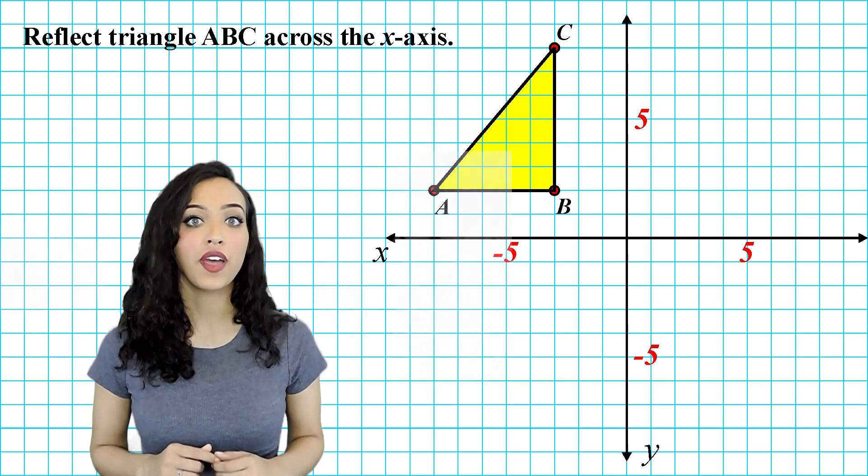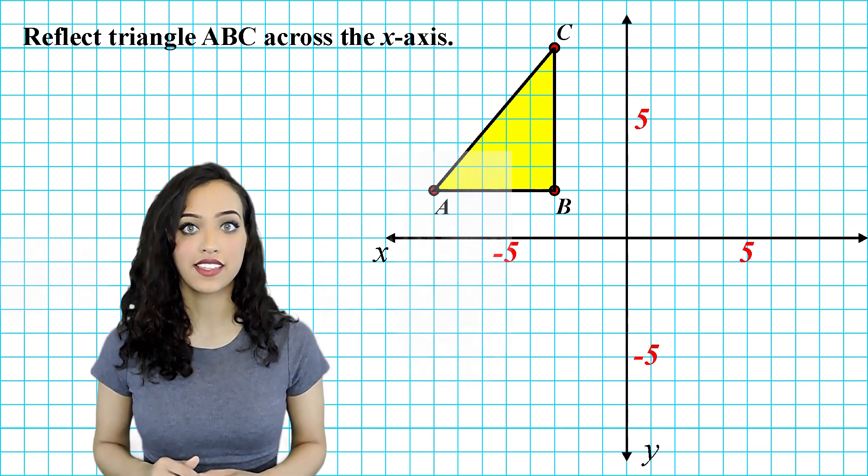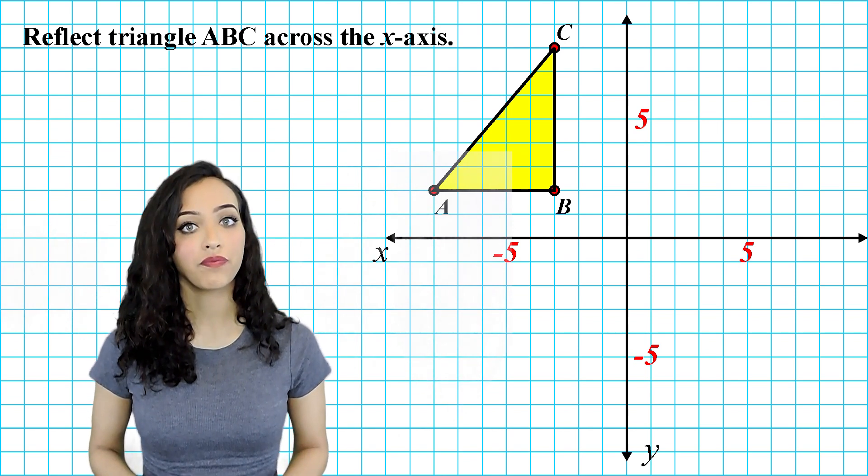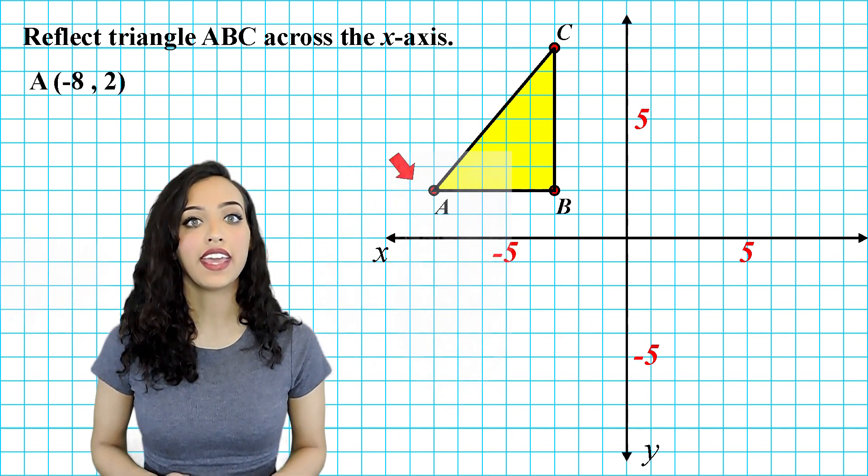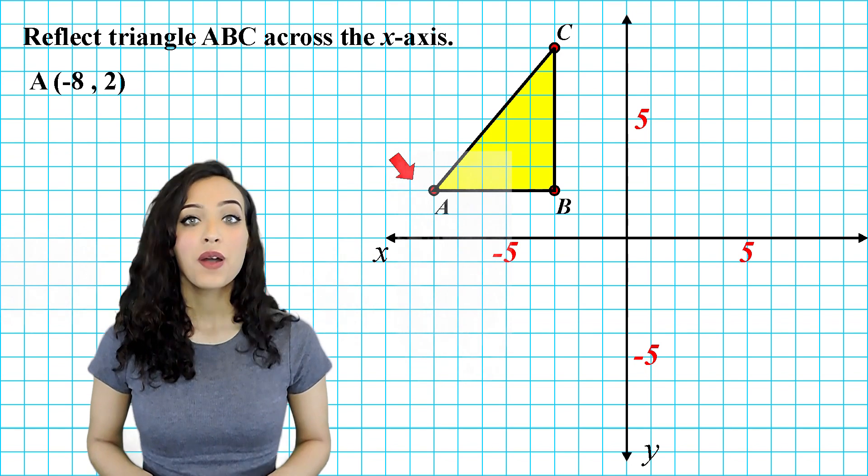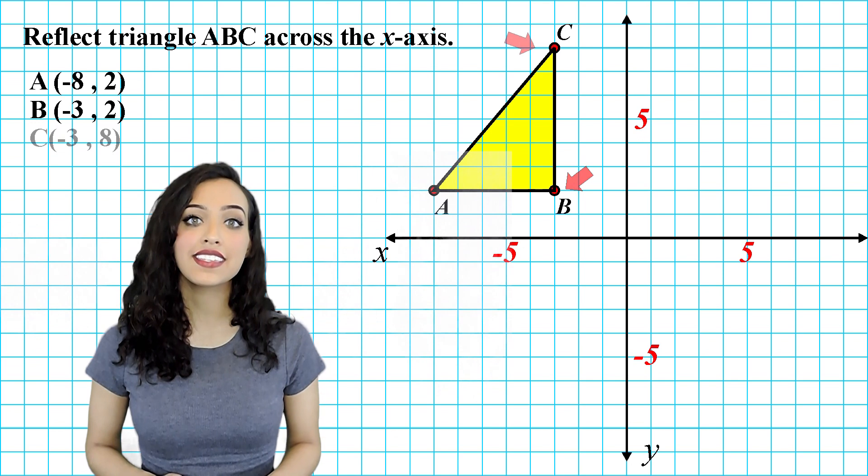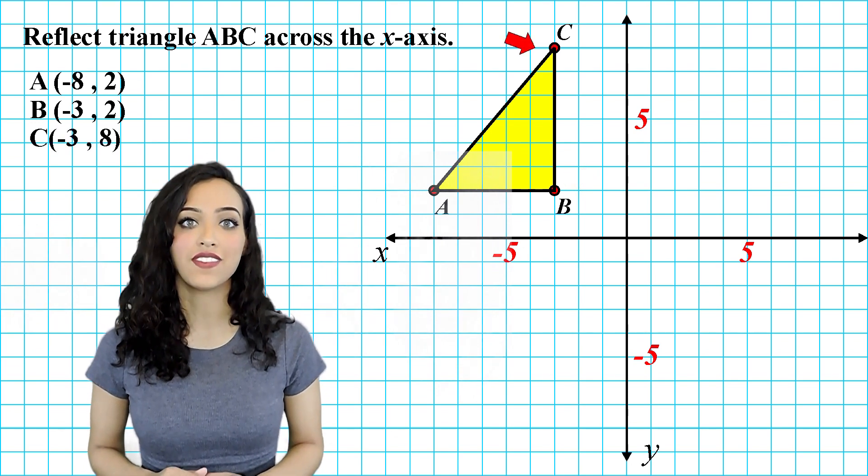First, we're going to reflect the triangle ABC across the x axis. I like to start by recording where our original points are located. Point A is located at negative 8 positive 2, Point B is located at negative 3 positive 2, and Point C is located at negative 3 positive 8.